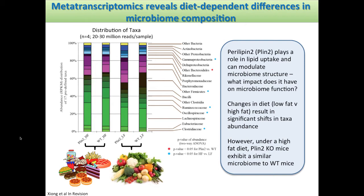However, when we look at the PLIN2 high-fat and wild-type high-fat mice — two different genotypes fed the same diet — the actual taxonomic abundances look very similar. Under a high-fat diet, the PLIN2 knockout mice exhibit a similar microbiome to the wild type. This is kind of the reverse of what we found in the metagenomic study, where different individuals exhibited huge diversity in their microbiomes. Here we've got two different genotypes of mice actually having very similar microbiomes in terms of their structure.